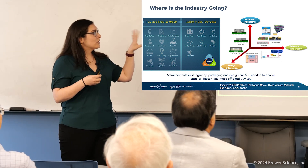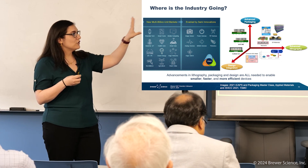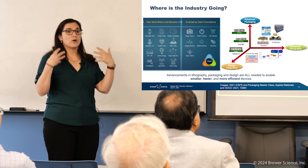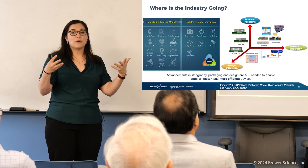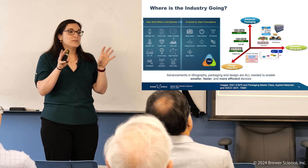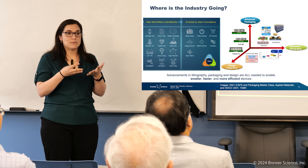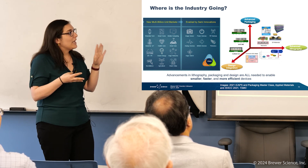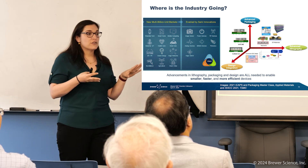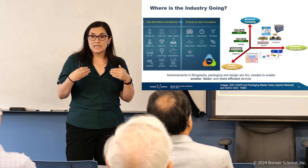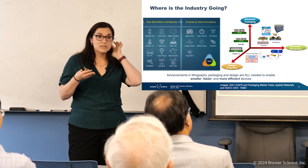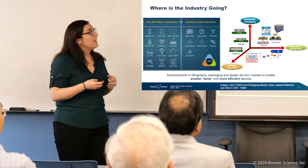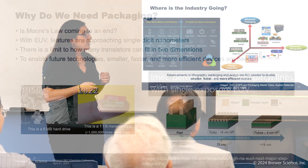So in order to accomplish all of those things, we look at three main areas. First, design integration — how do you design a chip to be as compact and energy efficient as possible. Second, advanced lithography, which Joyce Lowe spoke about last week. And third, advanced packaging, which is what I'm going to talk about today.